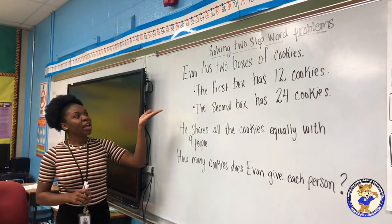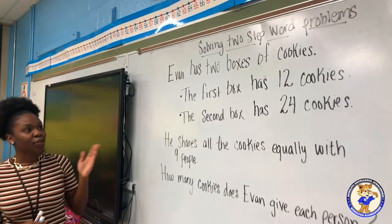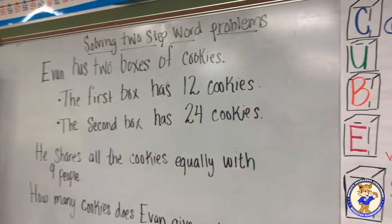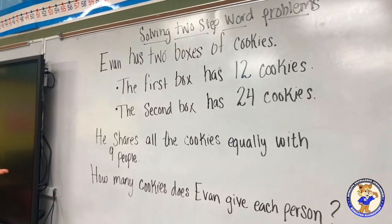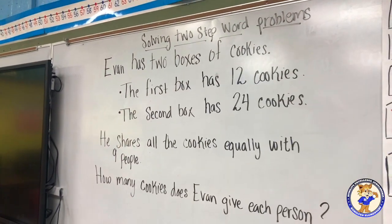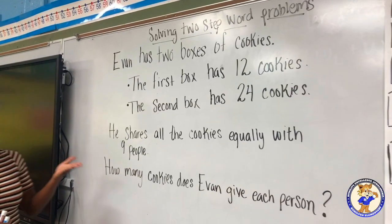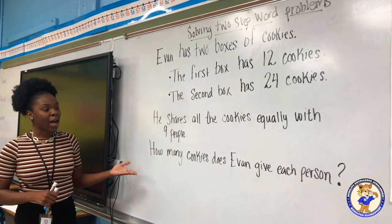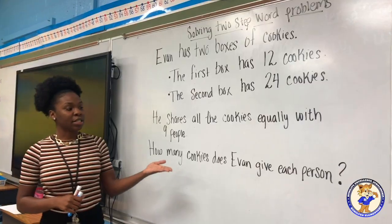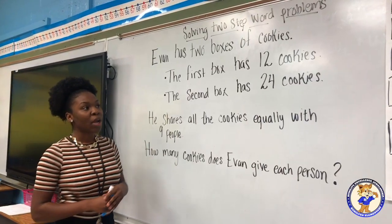Evan has two boxes of cookies. The first box has 12 cookies. The second box has 24 cookies. He shares all the cookies equally with nine people. How many cookies does Evan give each person?